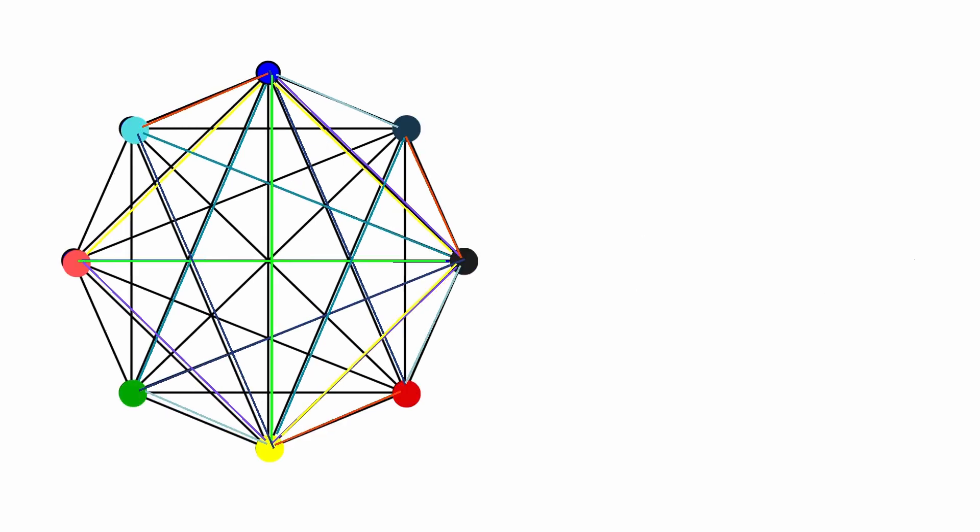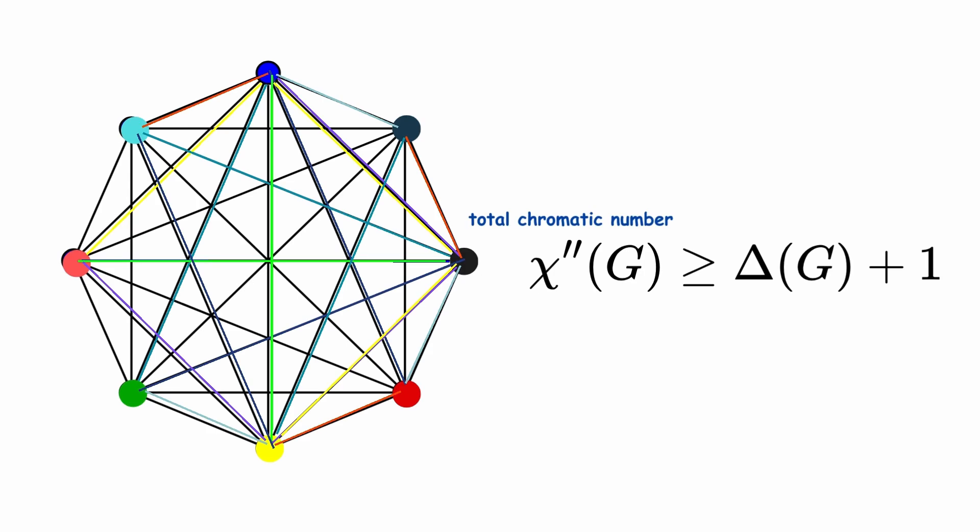Additionally, the vertex itself must have a different color from those edges. So, the total number of required colors for this graph can't be any less than 8. In general, the total chromatic number of a graph is always greater than or equal to its maximum degree plus one.